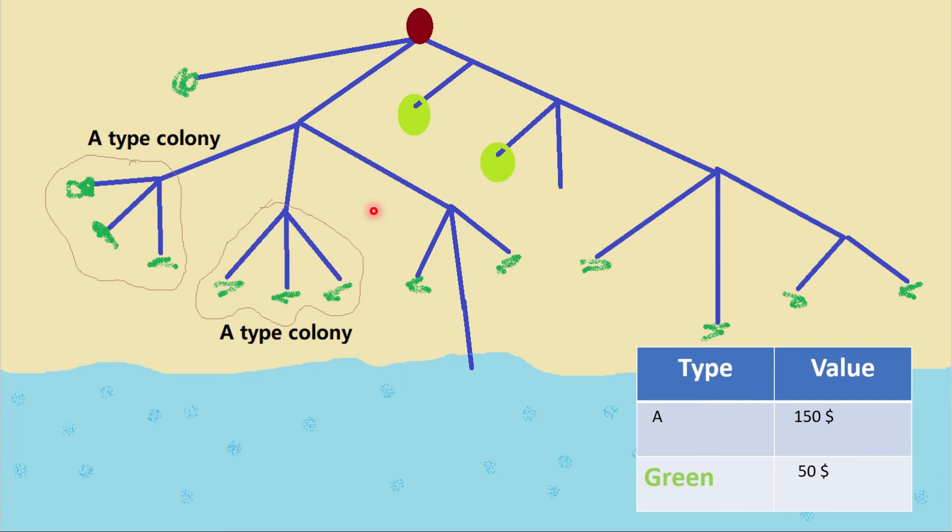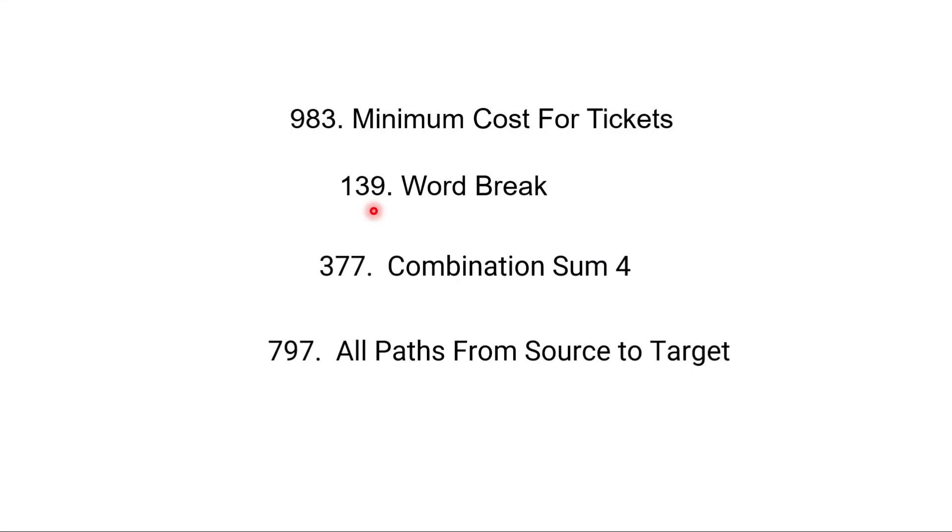So this is all about, in basic sense, recursion with help of dynamic programming. Now we will solve few problems where we can apply this technique. One such problem is 983 in LeetCode, that is minimum cost for tickets. Another one is 139, word break. Another one is 377, combination sum 4, and 797, all paths from source to target. There are lot of other problems also there.